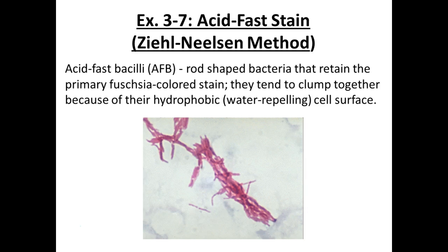These bacteria are all rod-shaped. They retain the primary stain, which is carbolfuchsin — this fuchsia color, this purplish pink. They also tend to clump together as you can see here, and this is because they're hydrophobic. They don't like water, so they just get clustered together. And we're preparing them for staining.